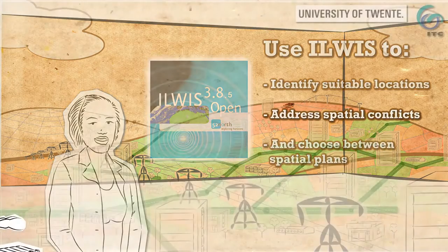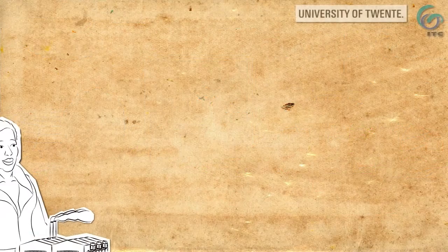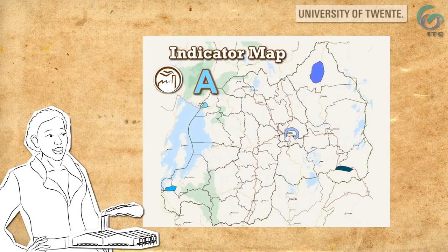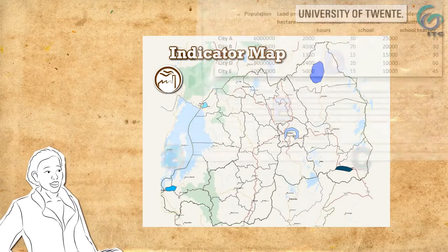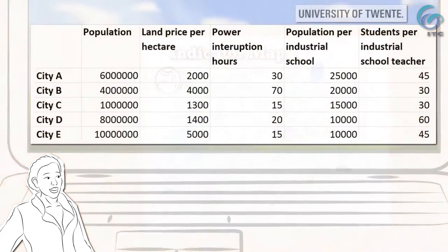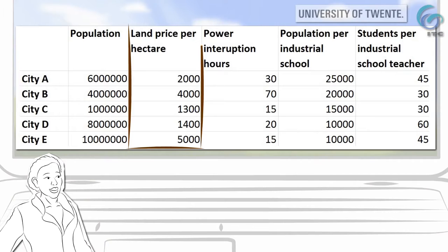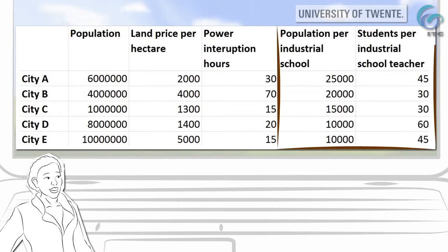A foreign company wants to locate its factory in one of five cities: A, B, C, D and E. The investor wants a large population for a large labour market, the lowest land price, the least possible power interruptions, and the best educated labour force.